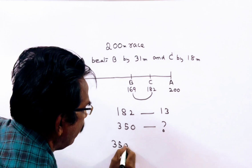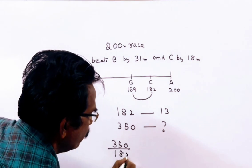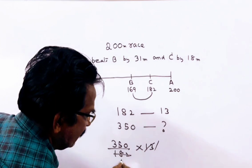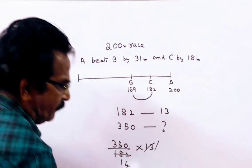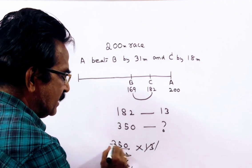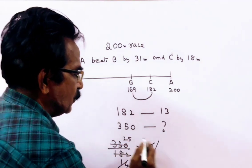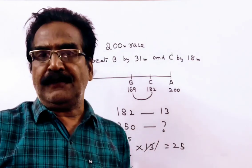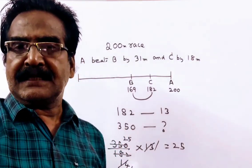350 upon 182 into 13. 13, 52, 34, 52. 4 times 25 meters. C beats B by 25 meters in a race of 350 meters.